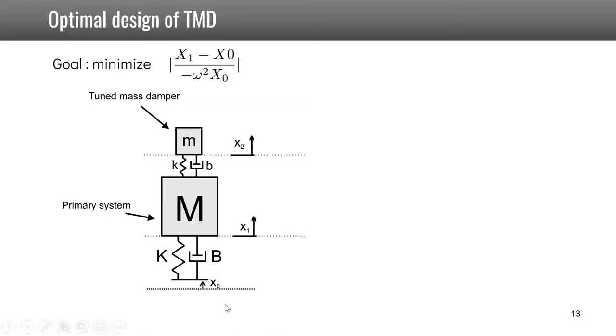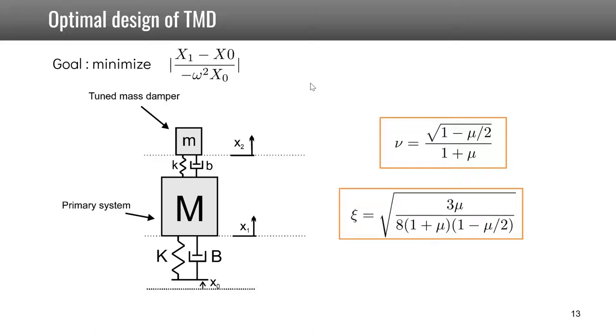Note that in the case of base excitation, such as for example earthquakes, the optimum is not exactly the same. The goal here is not to minimize the absolute displacement x1, but to minimize the relative displacement with respect to the ground to have the lowest strain energy in the primary system. This is divided by the base acceleration, minus omega squared x0, for example in the case of an earthquake. In this case, one can show that the frequency ratio and optimum damping to have P and Q at the same height are slightly different. Those have been derived by Warburton in 1982.